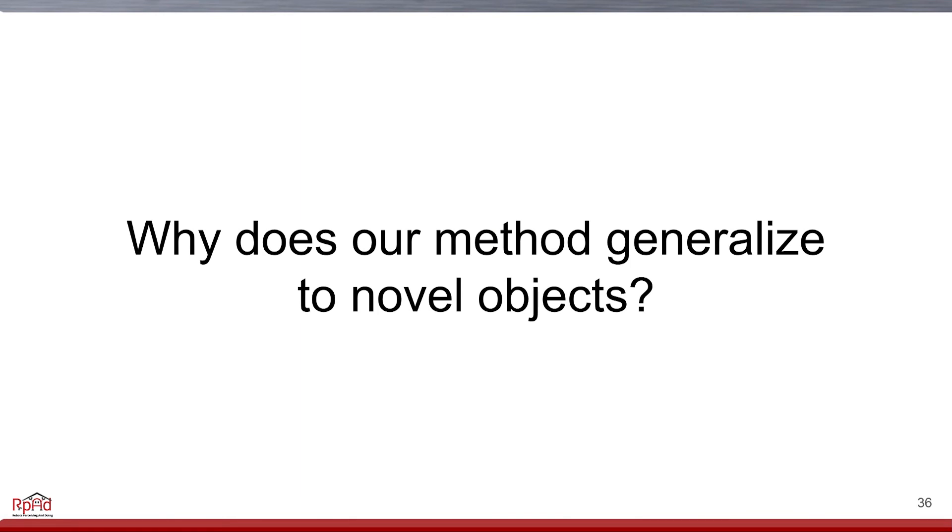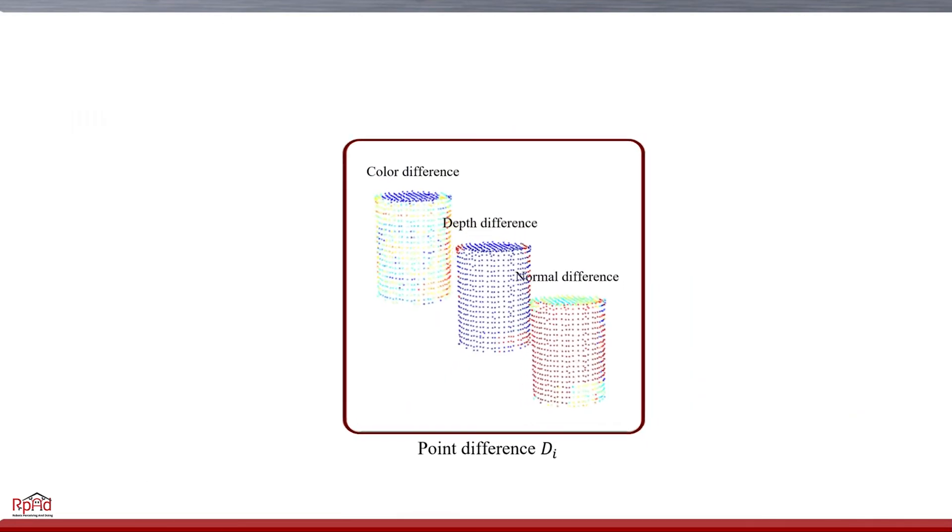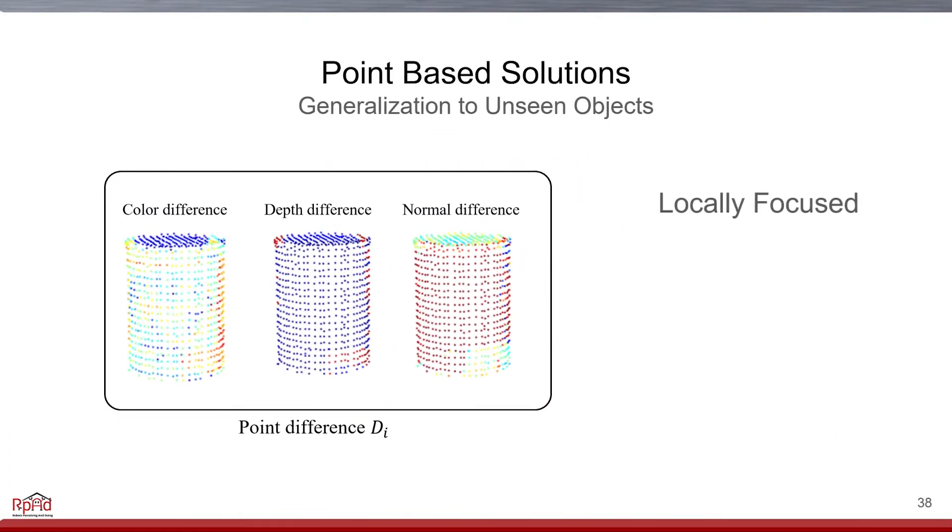We believe that it benefits from defining the problem as a function of point differences. This allows our method to focus on local differences and have a geometric neighborhood structure. Also, because we use the subtraction between the model and the scene, the network does not directly see the object's specific information, and thus is less overfitting.